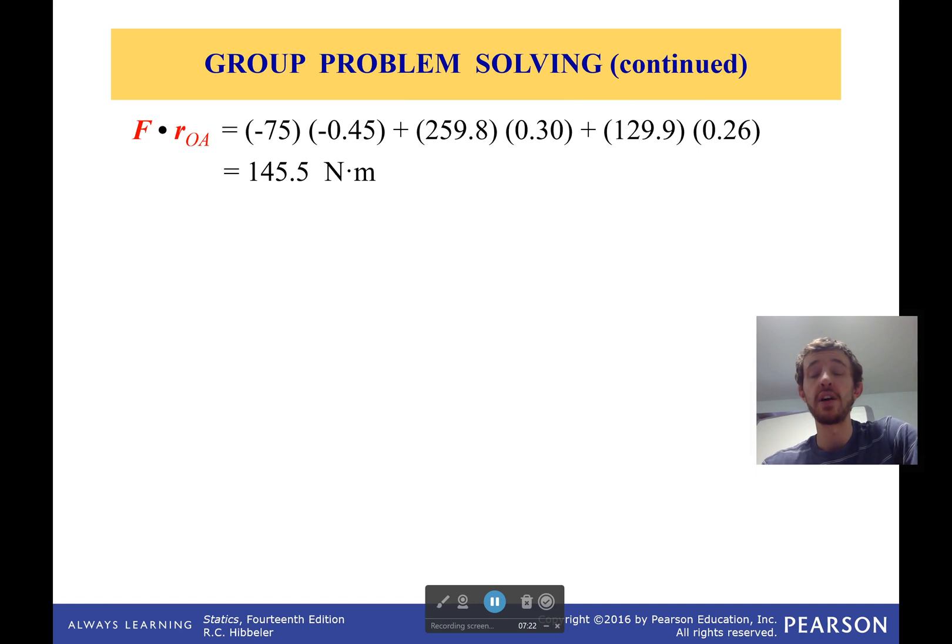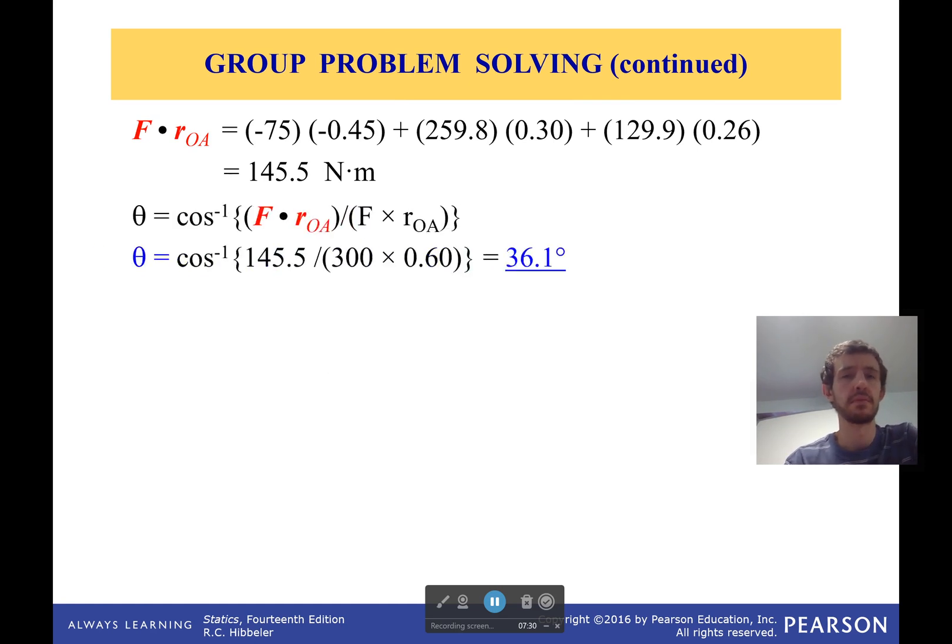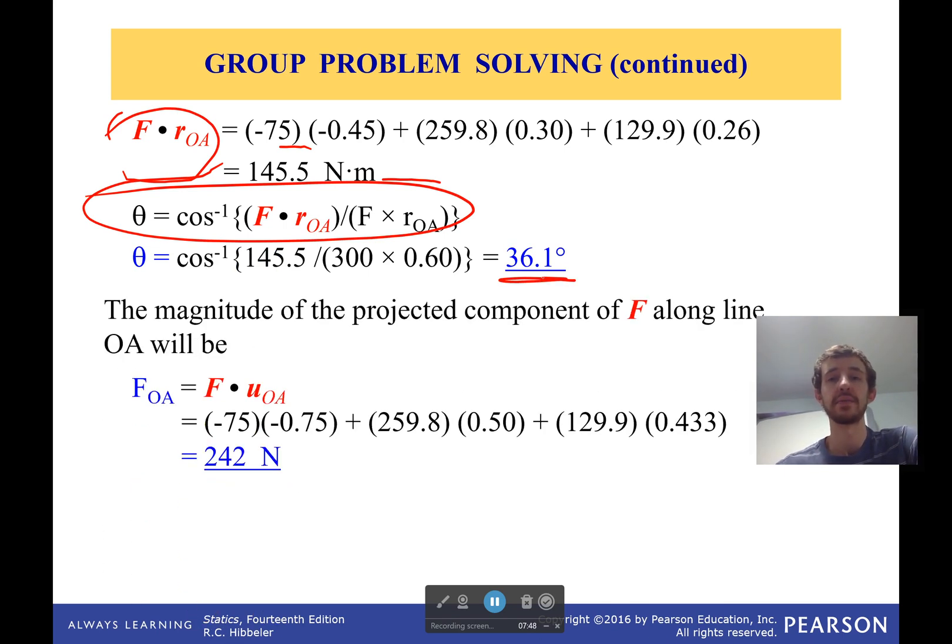So if we want to find the component that is along our line of interest, we take the dot product between the unit... ah, in this case we're trying to solve for the angle first. So if we want to find the angle, we take the dot product between the position vector and our force vector first, and then we plug it into our angle equation right here. And this gives the angle between those two lines, which is 36.1 degrees. And if we want the magnitude of the projected component, we take the dot product of the force vector and the unit vector of the line we care about. And that comes by 242 newtons.